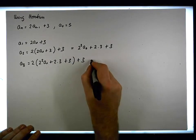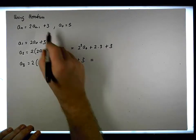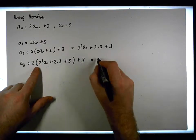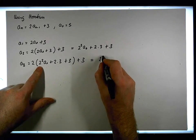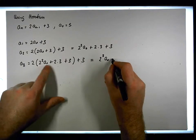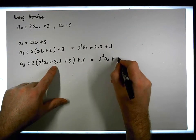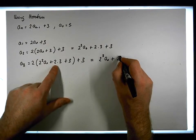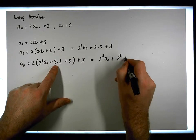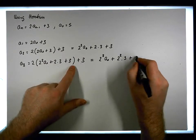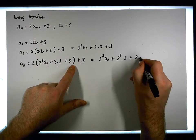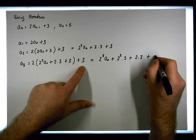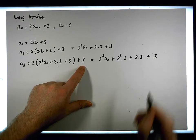Plus 3, which gives us a_2 = 2 cubed times a_0, plus 2 squared times 3, plus 2 times 3, plus 3.